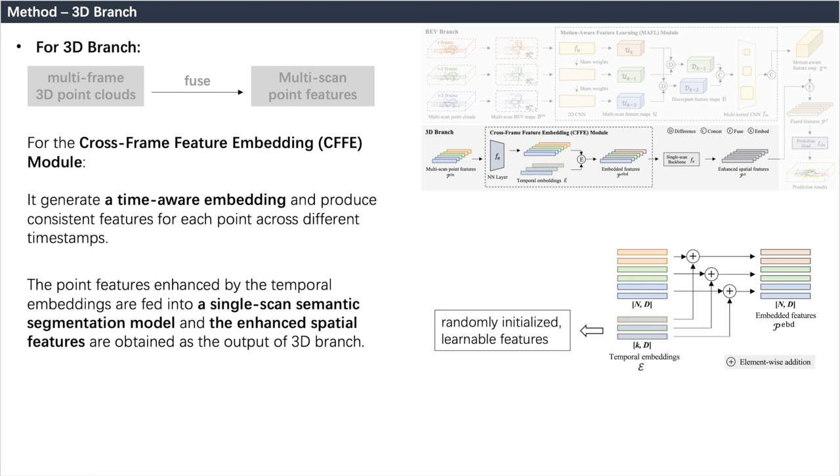Then, the point features enhanced by the temporal embeddings are fed into a single-scan semantic segmentation model, and the enhanced spatial features are obtained as the output of the 3D branch.